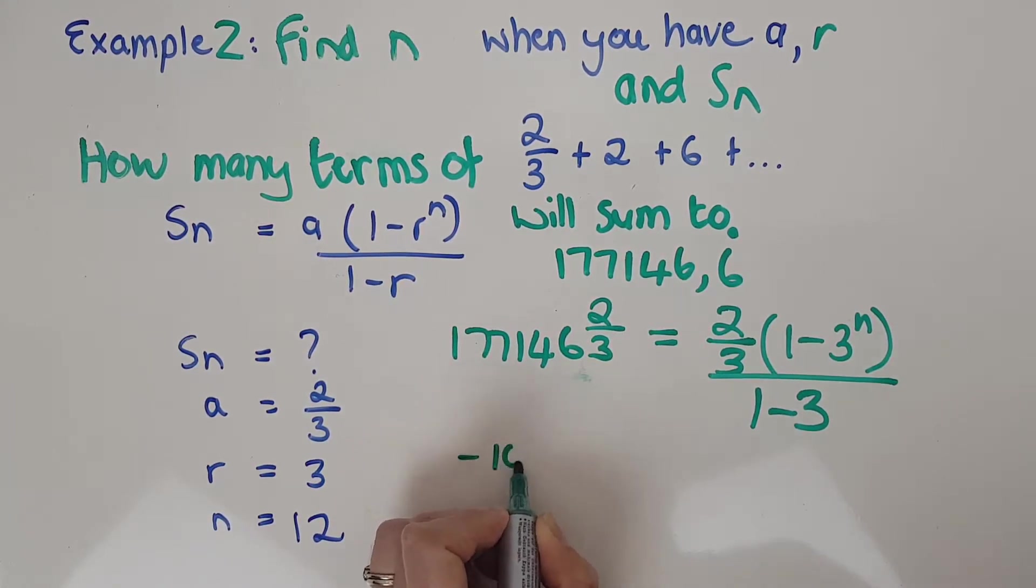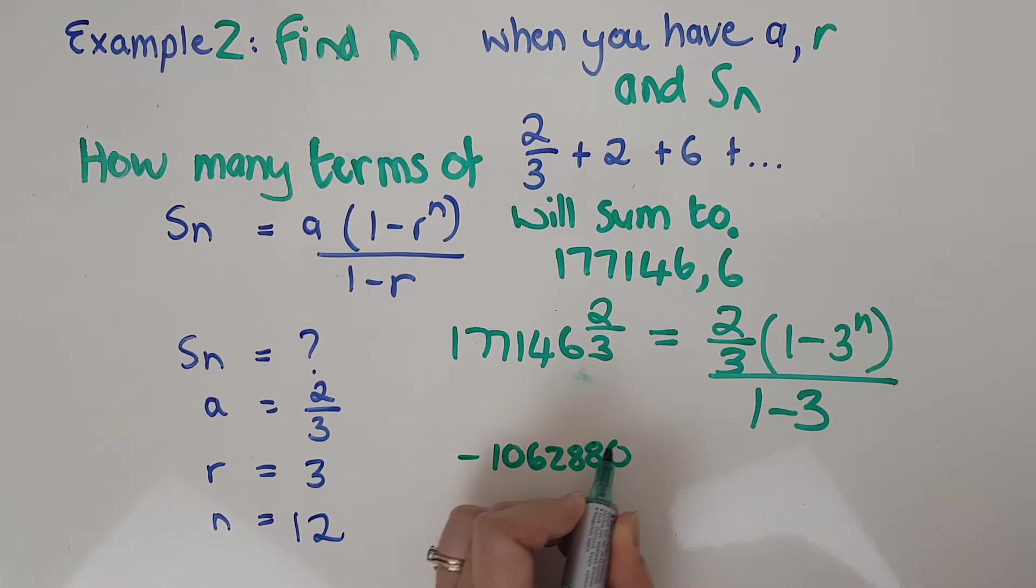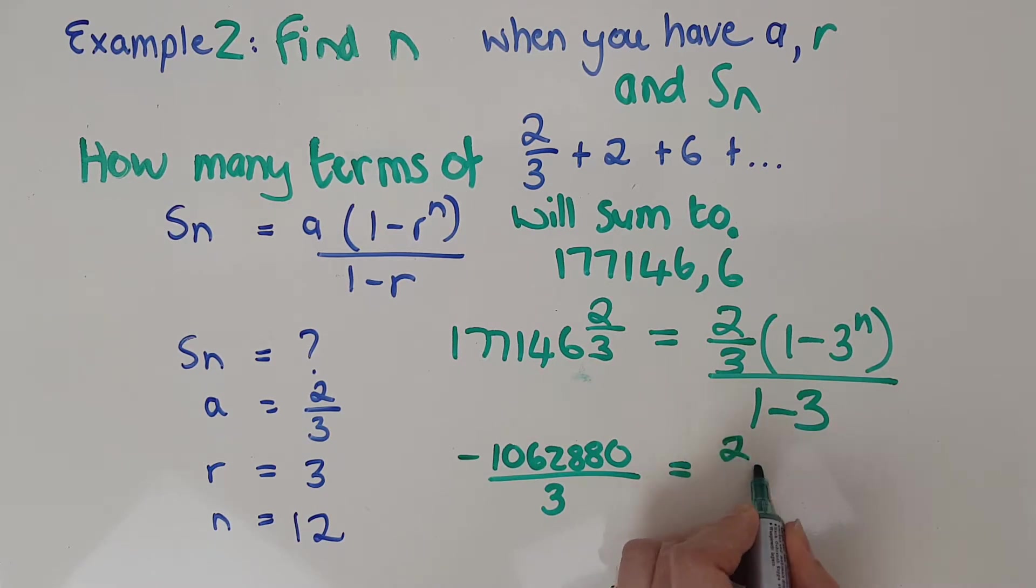Multiplying by negative 2 and I'm just going to keep this in fraction form here. I get negative 1062880 over 3 and that now equals this thing, my 2 thirds. I haven't multiplied in yet. I'm not going to do that just yet because actually I want n by itself.